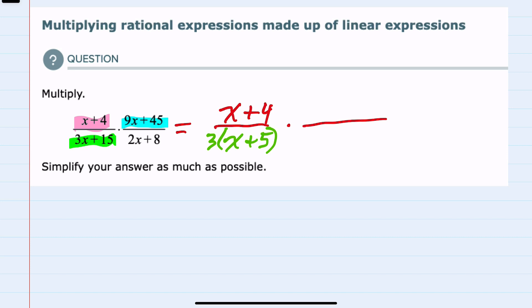Moving to the right fraction, on the top I have 9x plus 45. I can factor a 9 out of both of those terms, leaving me with an x in the first term. And factoring the 9 out of 45 would be a plus 5.